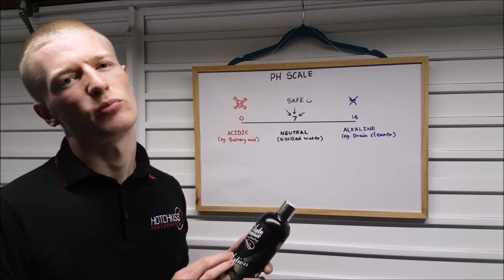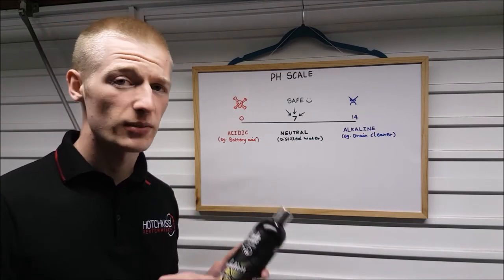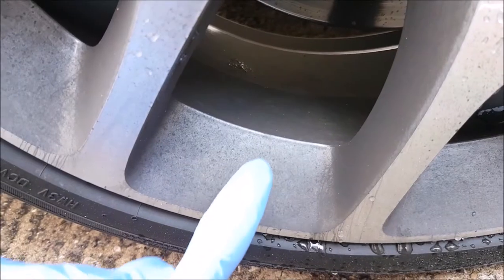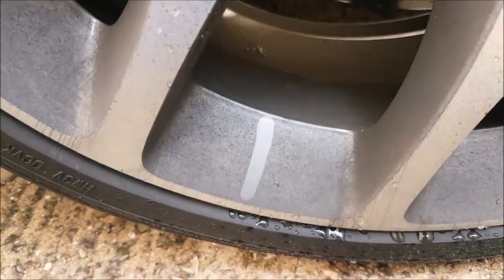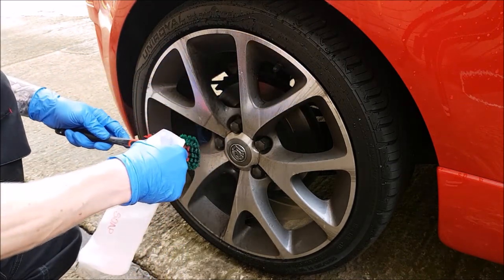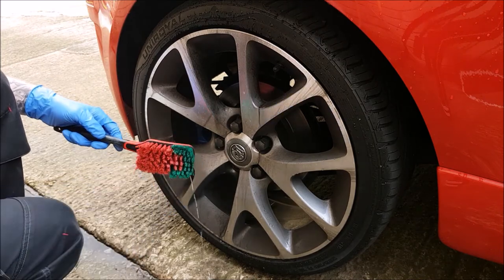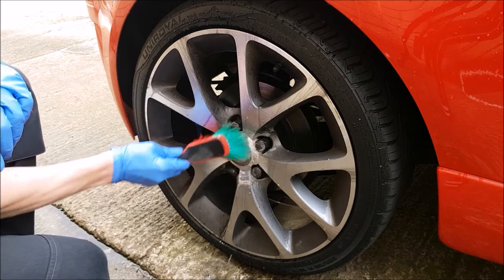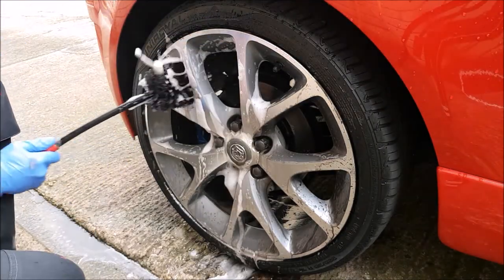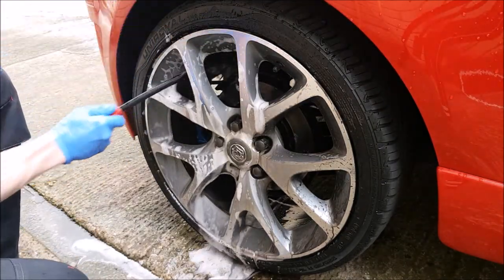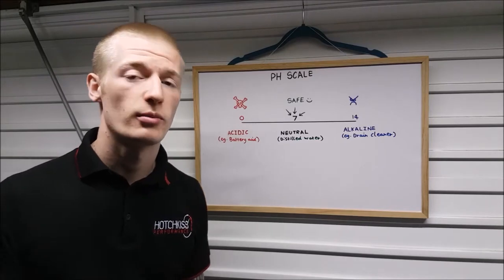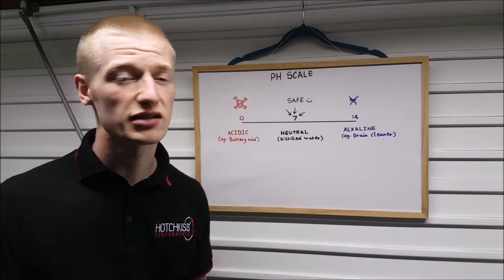These types of products generally handle light soiling on wheels that have already been sealed, so the dirt isn't going to bond to the surface — basically any dirt you can wipe off with your finger. I like to squirt a bit into a trigger sprayer and use it as a traditional spray-on wheel cleaner, topping up with water to the correct dilution, rather than just using it in a bucket where the suds die off.